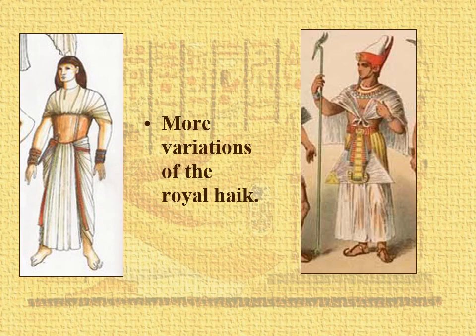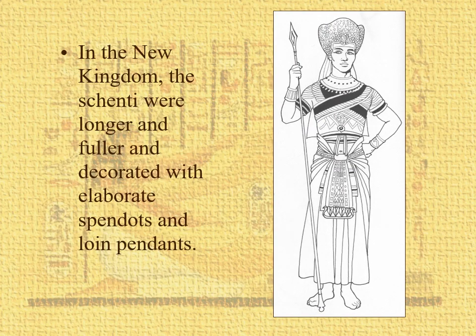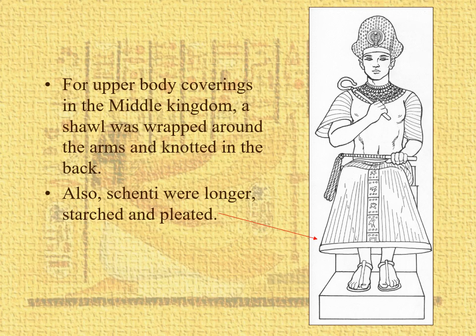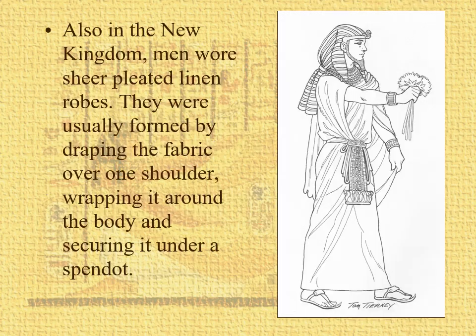There are some more variations. Here in the New Kingdom, the shinti is longer and fuller, draped with elaborate spin dots and loin pendants. We no longer have the apron here. And we have these called lectors — a sort of cross-braced piece made of leather, very popular. Here we see a pharaoh with some upper-body covering — kind of a hake, probably knotted in the back — and the shinti longer and pleated. This is a sheer pleated linen robe; mostly draping over the fabric, so not a lot of fitting.